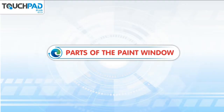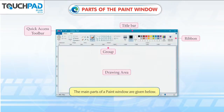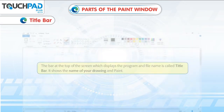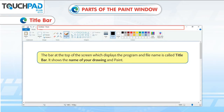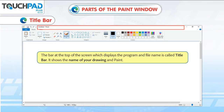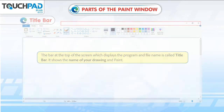Parts of the Paint Window. The main parts of a paint window are given below. The bar at the top of the screen which displays the program and file name is called the Title Bar. It shows the name of your drawing and paint.